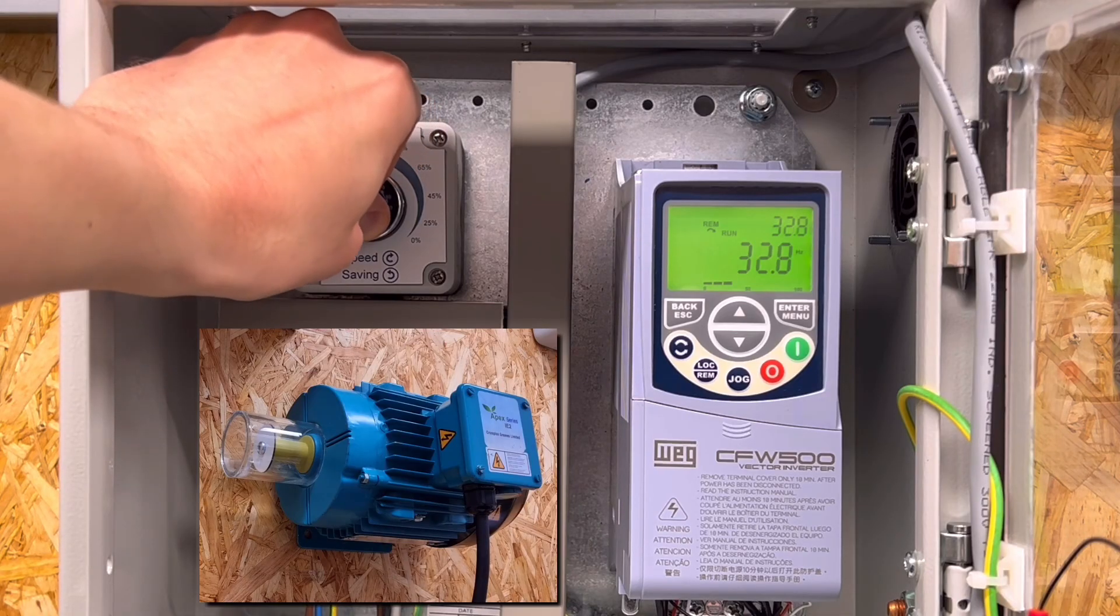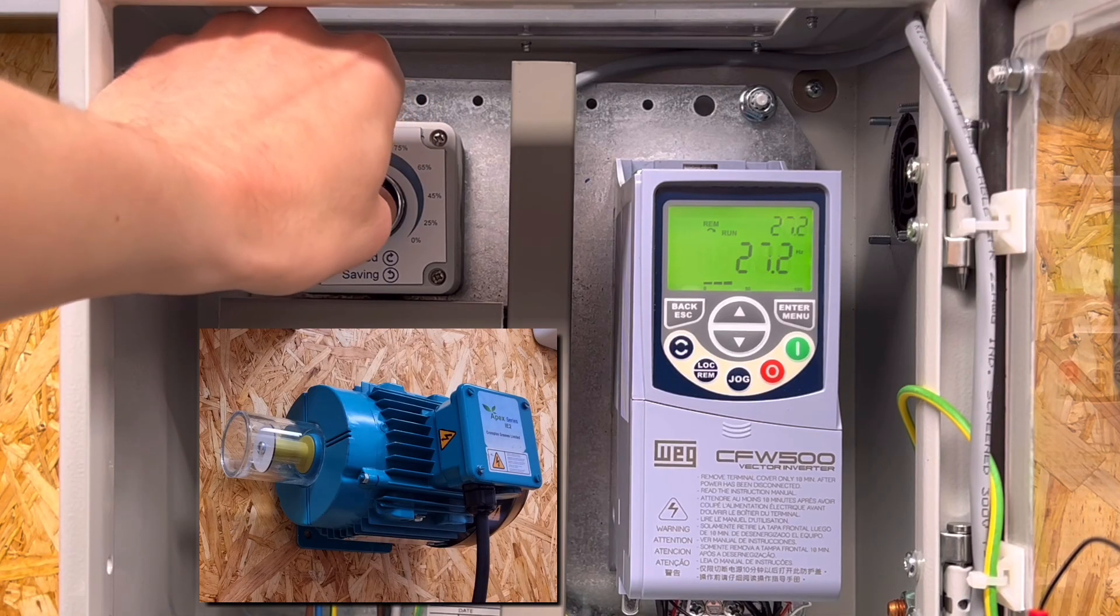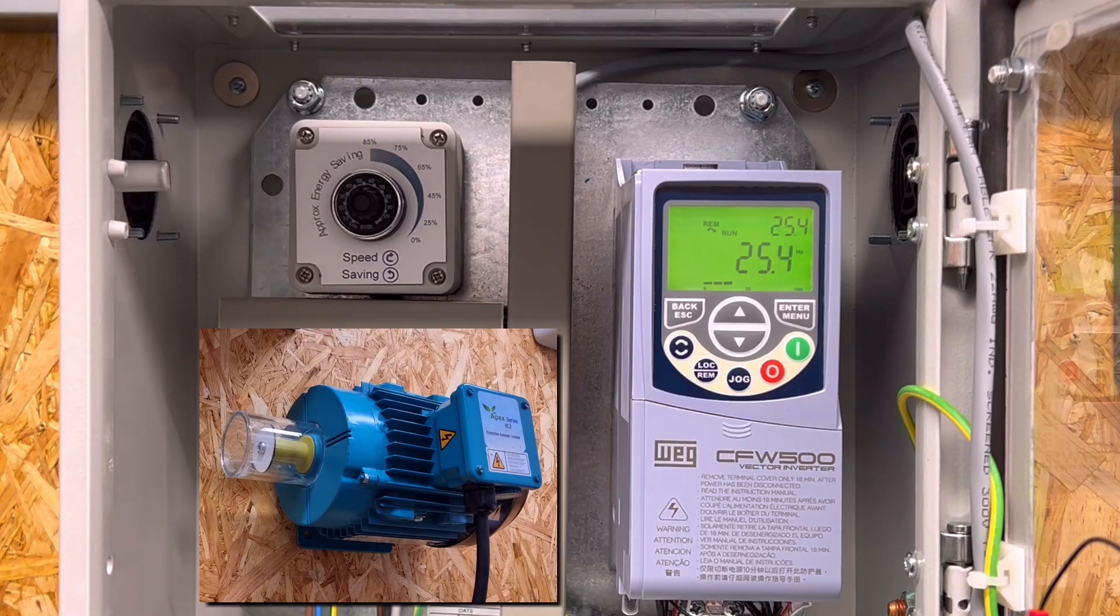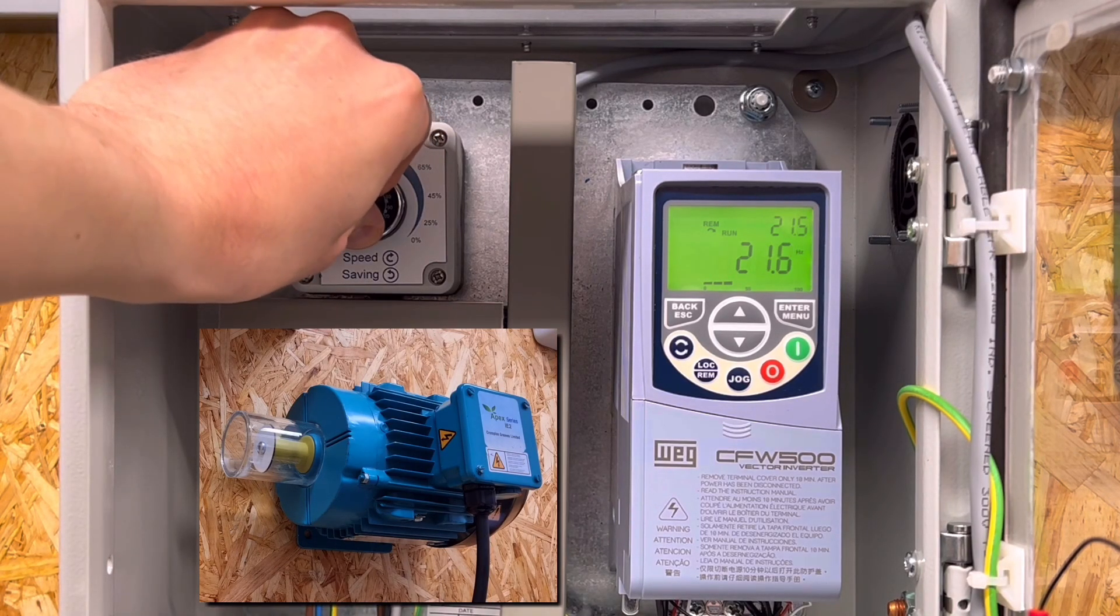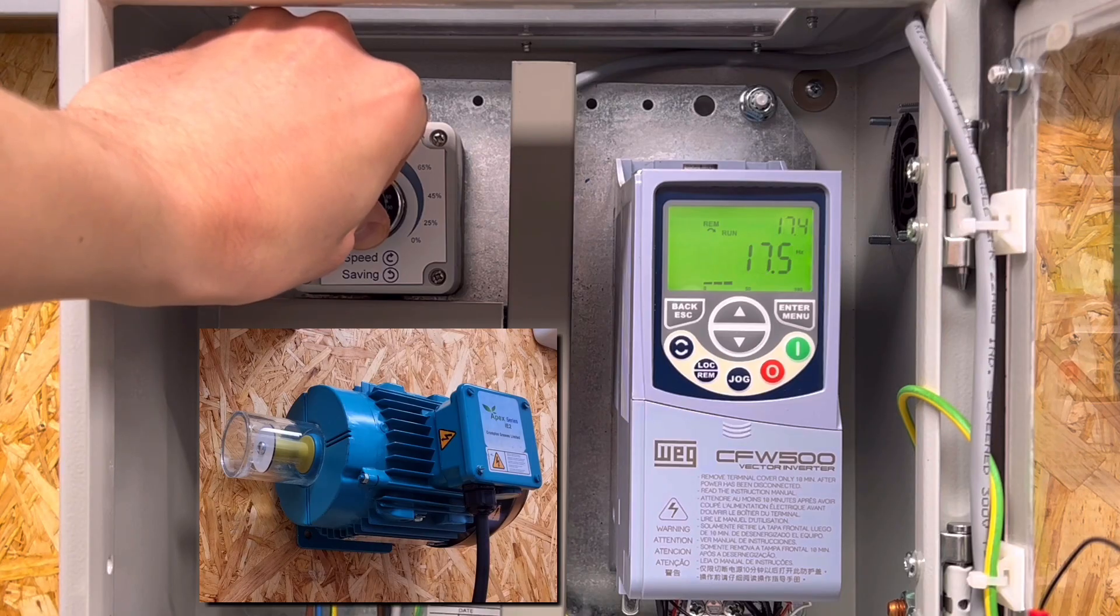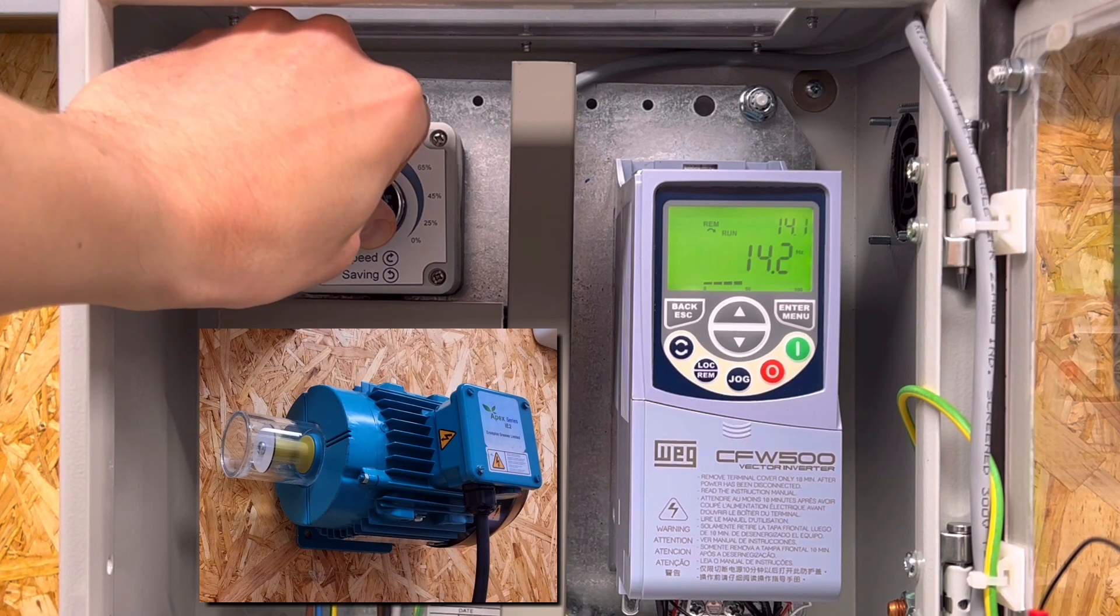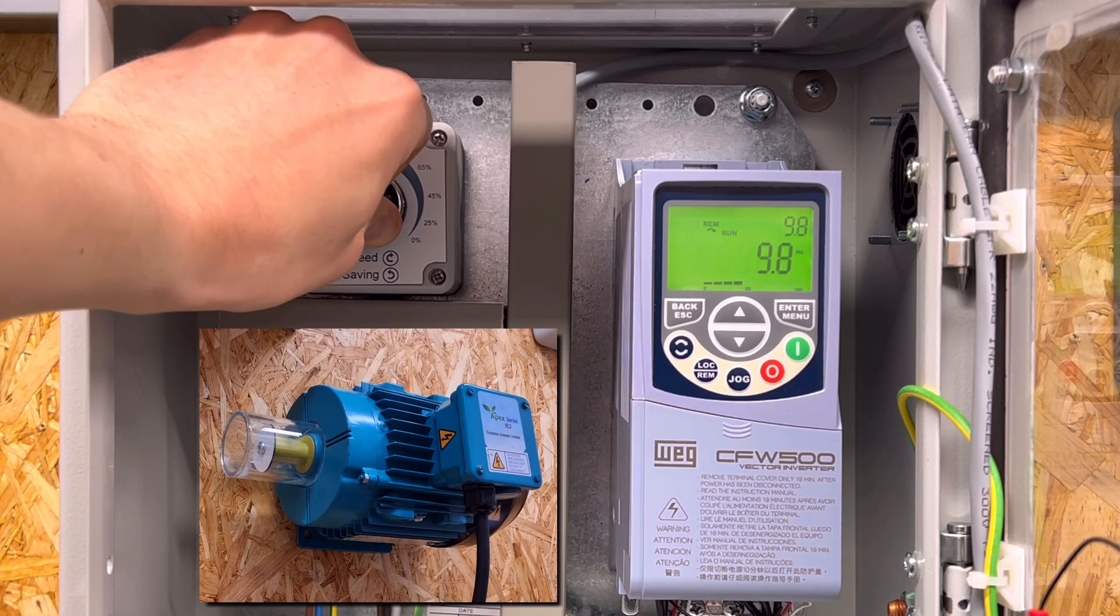So this is brilliant for applications where you might want to change the speed at which a machine runs—maybe on a conveyor belt, an assembly line, or pumping and ventilation equipment. And not only does that control help to fine-tune the motor speeds, it can also make your equipment run more efficiently. It's very, very clever stuff.